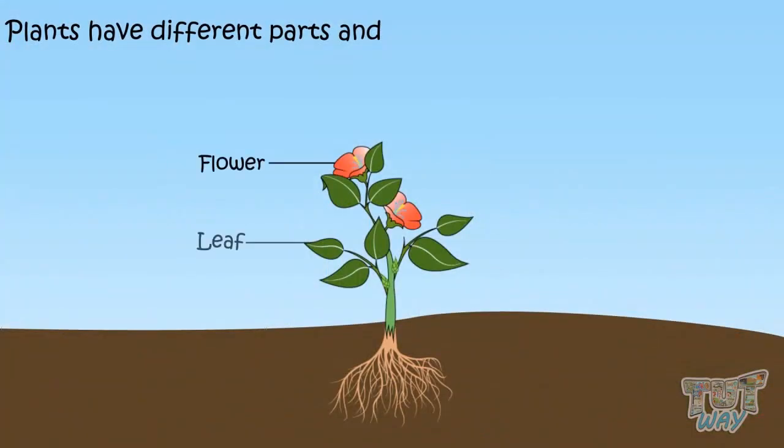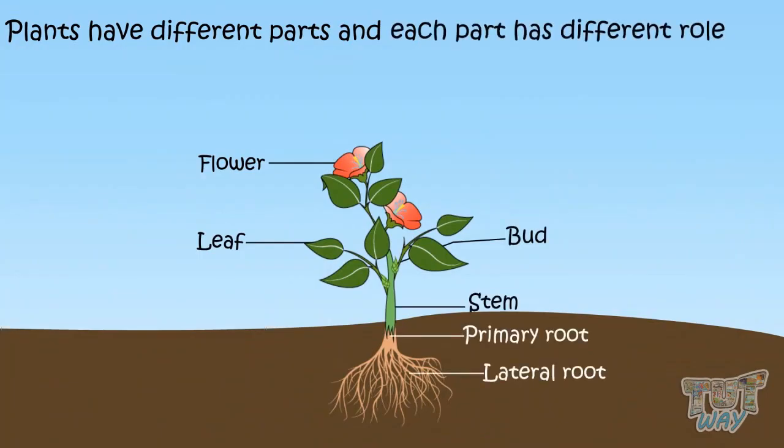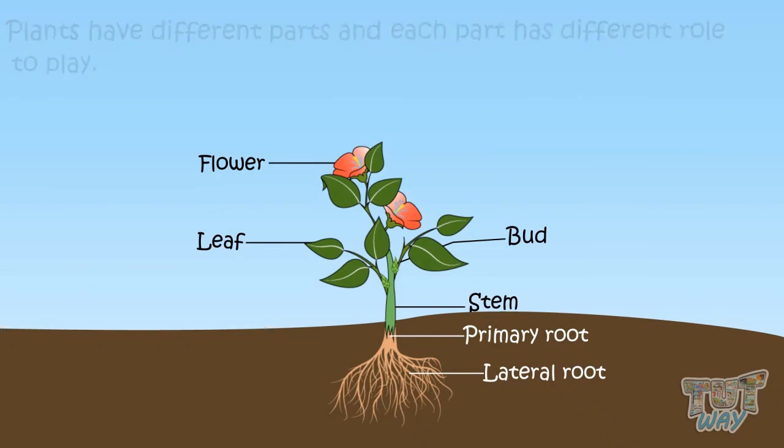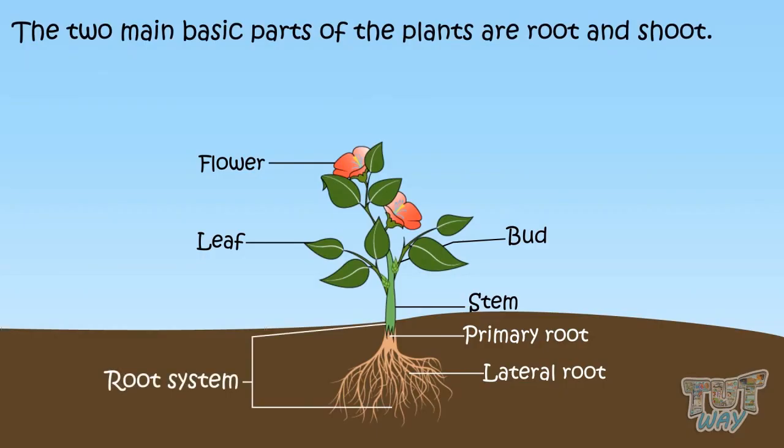Plants have different parts where each part has different roles to play. All plants have two main basic parts, that is, the root and the shoot.